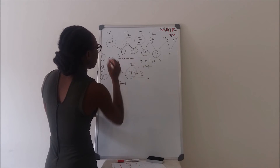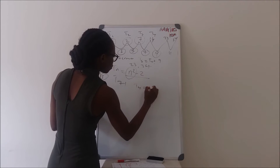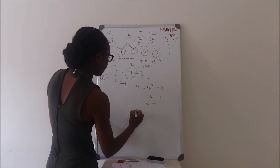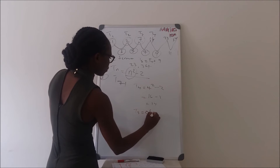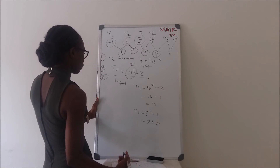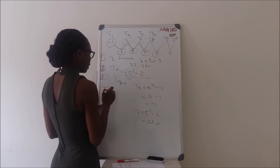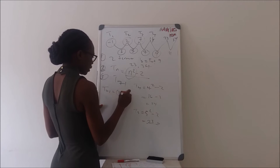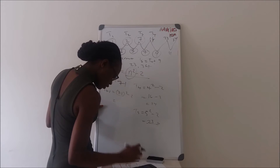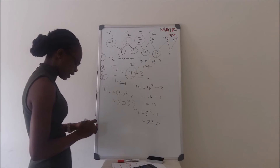So it makes sense. Let's verify: T4 is 4 squared minus 2, which is 16 minus 2, which is 14. Correct. And T5 is 5 squared minus 2, which is 25 minus 2, which is 23. Yes, it is correct. So the third question says we must find T71. T71 equals 71 squared minus 2, which gives us 5,039.